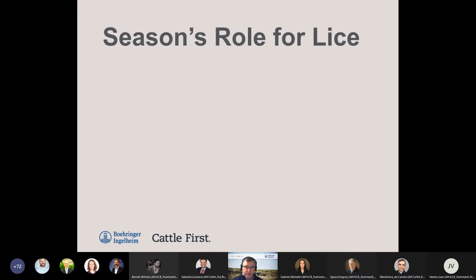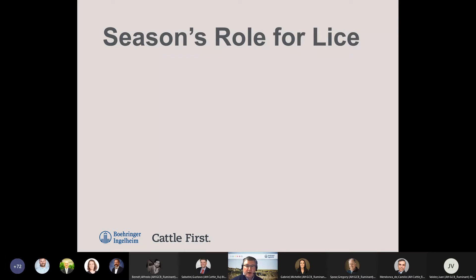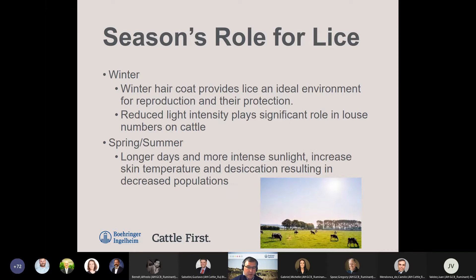What role do seasons play? In the wintertime, that is going to provide the ideal environment for lice reproduction and protection. That heavy winter hair coat gives lice the most ideal environment. Reduced light intensity plays a significant role in louse numbers, and without that light intensity or warm air, those lice are able to reproduce quite prolifically. In the spring and summer, you have longer days, intense sunlight, increased skin temperatures, and increased drying — all resulting in decreased lice populations.